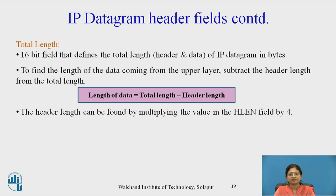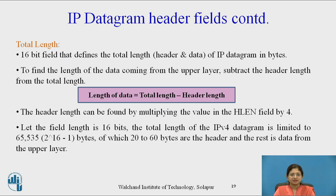The total length is a 16-bit field that defines the total length — header plus data — of the IP datagram in bytes. To find the length of the data from the upper layer, subtract the header length from the total length: data length = total length − header length. The header length can be found by multiplying the value in the header length field by 4. The total length of an IPv4 datagram is limited to 65,535 bytes, of which 20 to 60 bytes are the header and the rest is data from the upper layer.